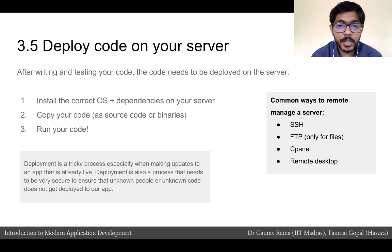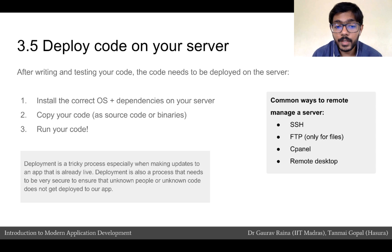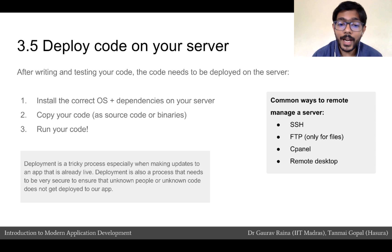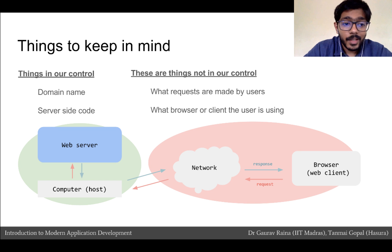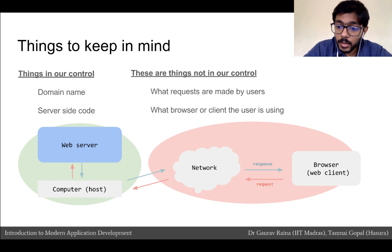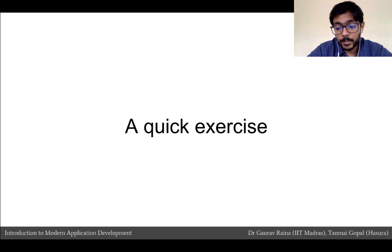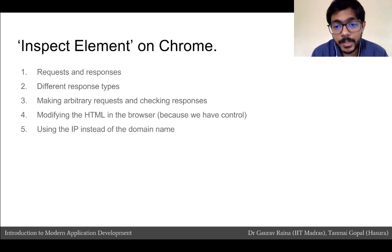It is important to understand that deployment is a very tricky process, especially when making updates to an app that is already live. Deployment also needs to be very secure, because you don't want random people or random code deployed onto your server. It's important to remember that some things are in our control and some are not. The domain name and the server-side code we deploy are in our control, but what is not in our control is the network, what requests browsers make, how they make requests, and how they process the response.